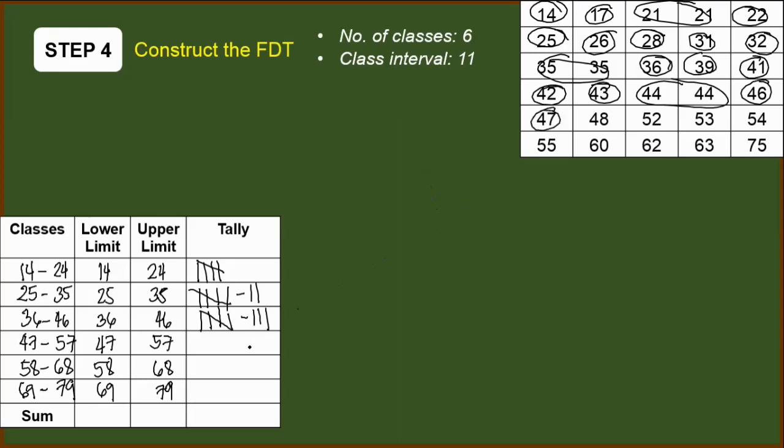Next, we have 47. We will now go to the fourth class. 48, 52, 53, 54, 55. Then we have 60. However, 60 is already here. 62 here as well. And of course, 63 is here. And finally, we have 75.